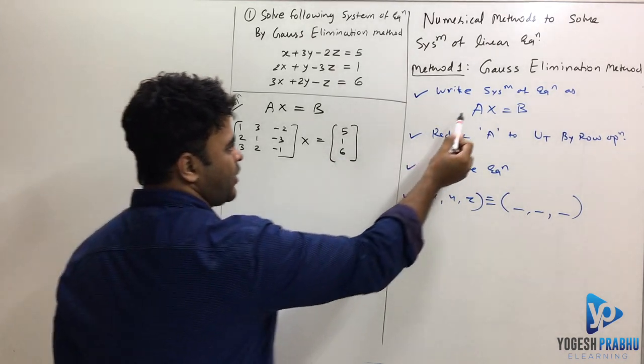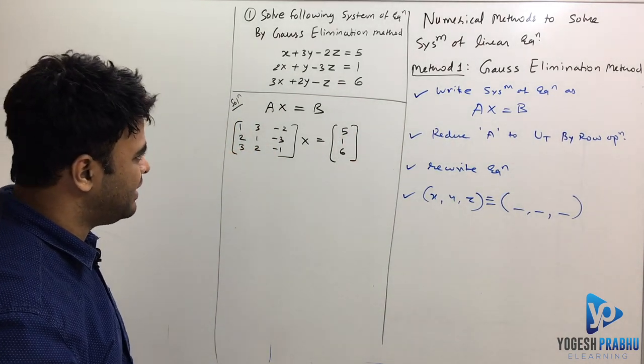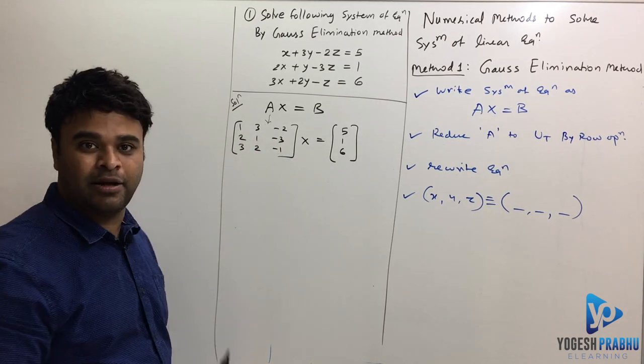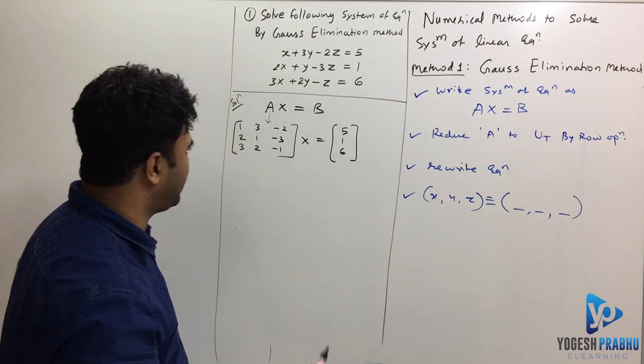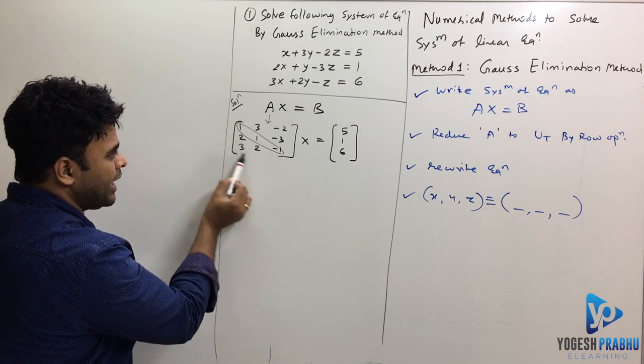So first step I did was I wrote it in Ax equals b form. Once I write it as Ax equals b form, I have to reduce this A. A is over here. I have to reduce A to upper triangular matrix. Now what is an upper triangular matrix?